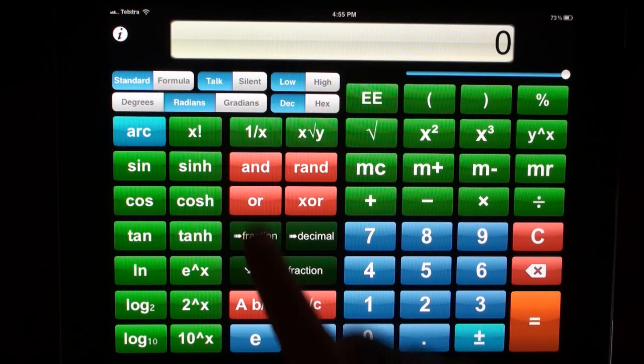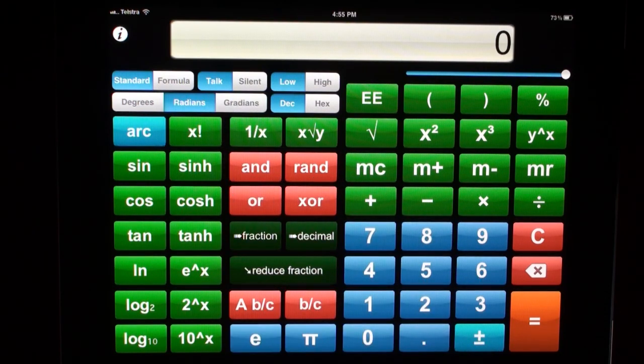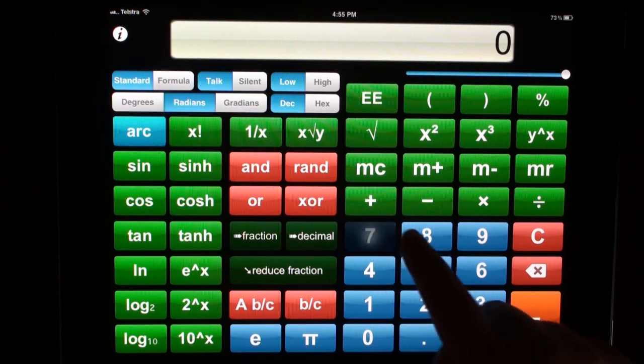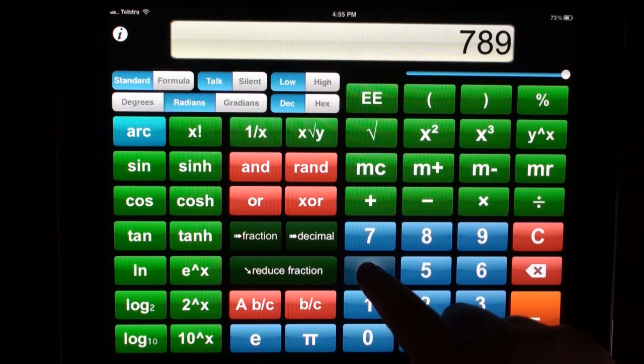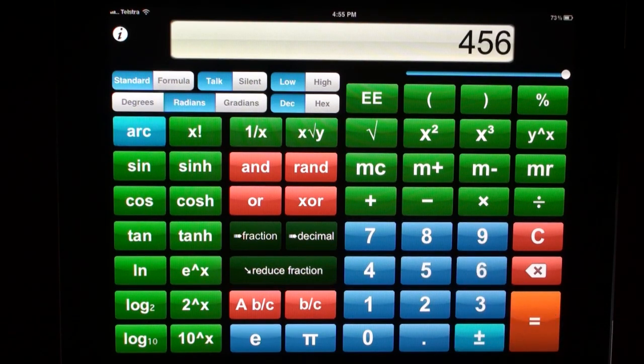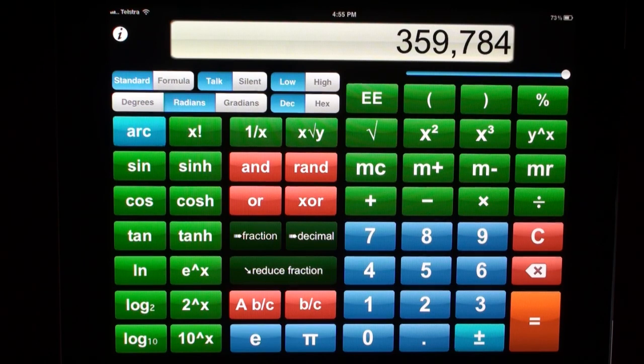When your calculator is in talk mode, it will pronounce the names of the buttons that you click on. 7, 8, 9, multiply, 4, 5, 6, and the answers. Equals 359,784. I didn't quite catch that answer. Let's hear it again.